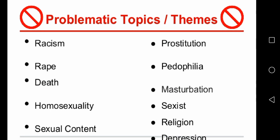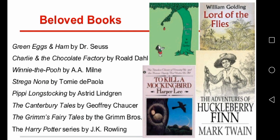The term derived from Thomas Bowdler's 1818 edition of William Shakespeare's plays, which he reworked in order to make them more suitable for women and children. He similarly edited Edward Gibbon's Decline and Fall of the Roman Empire.